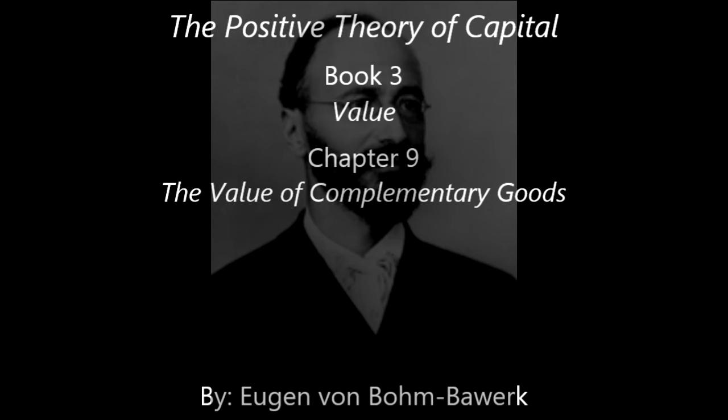The distribution, then, will be made thus: of the total value of the whole group, which is determined by the marginal utility of the joint employment, this fixed value is previously assigned to the replaceable members, and the remainder, which varies according to the amount of the marginal utility, is reckoned to the non-replaceable members as their individual value. To use our old illustration again, say that the joint marginal utility amounts to 100, and that the members A and B have a fixed substitution value of 10 and 20 respectively: 70 must be reckoned the individual value of the non-replaceable good C. Or say that the marginal utility of the group amounts to 120: the individual value of C will be 90.